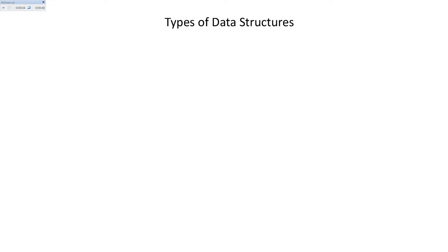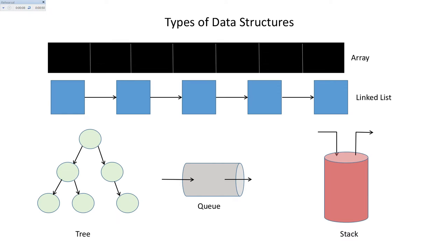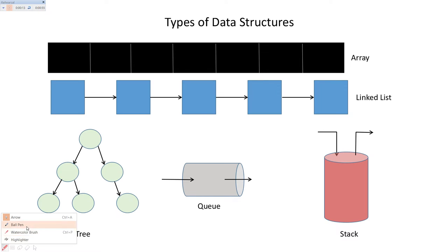Coming into the types of data structures, there are two types: linear data structures and nonlinear data structures. Nonlinear data structures means one element is connected to n number of elements. For example, if you choose a tree, you choose nonlinear data structures.